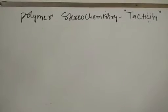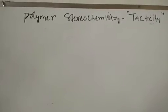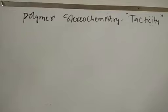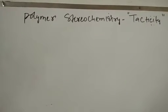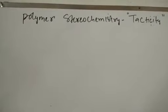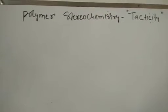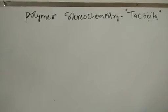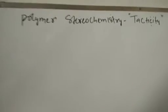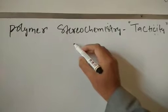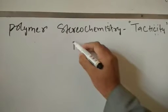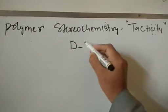Bismillah ar-Rahman ar-Rahim. Today we will see another second portion of stereochemistry of polymers, which we call the tacticity of polymers. This isomerism, the second type of isomerism, is also called DL-Isomerism. So in this part we will discuss the DL-Isomerism in polymers.